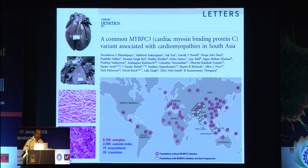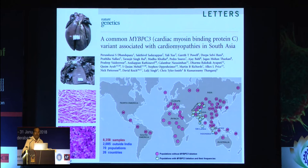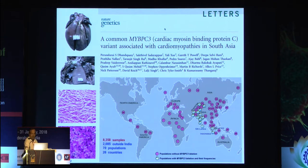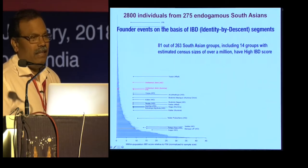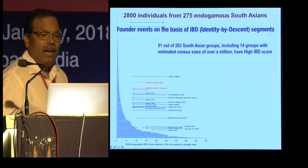We then screened populations from 26 countries, totaling over 8,000 samples. To our surprise, we found that mutation existing only in South Asia and not in other countries. That was the reason we took samples from other South Asian populations as well. We analyzed and found that 81 out of 263 populations showed a high IBD score.